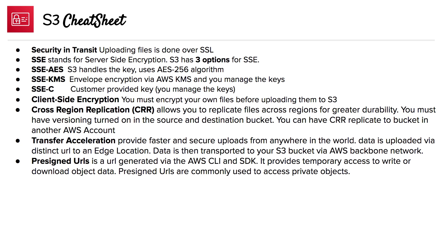Transfer acceleration provides fast and secure uploads from anywhere in the world. Data is uploaded via a distinct URL to an edge location, and is then transported to your S3 bucket via the AWS backbone network, which is very fast. Pre-signed URLs are generated via the AWS CLI or SDK and provide temporary access to write or download an object. Pre-signed URLs are commonly used to access private objects.